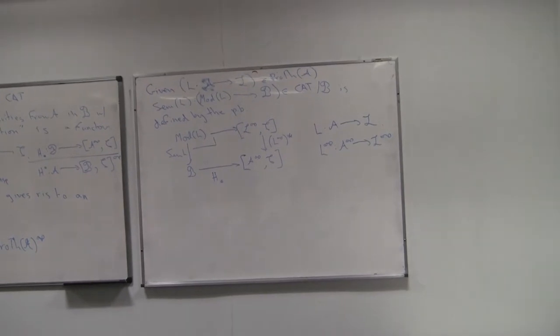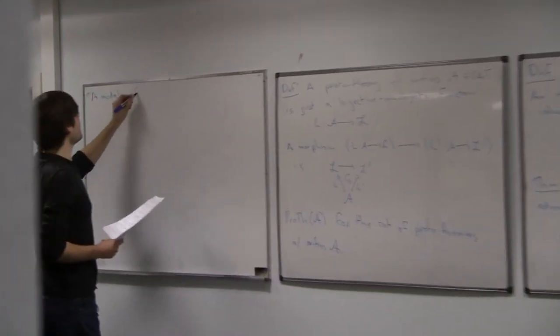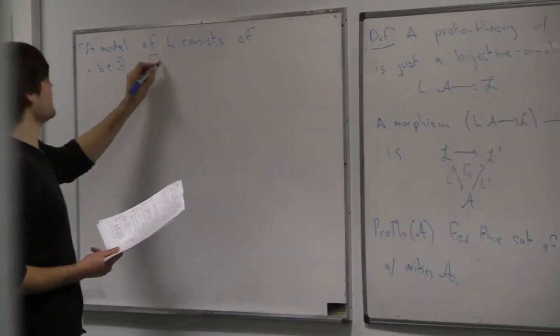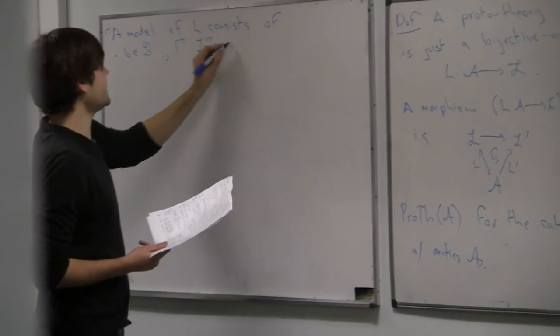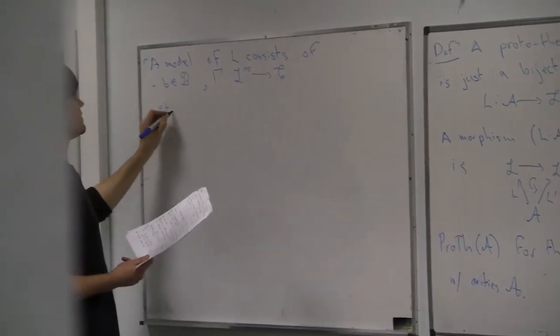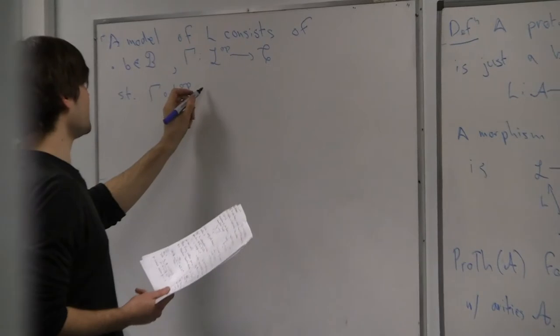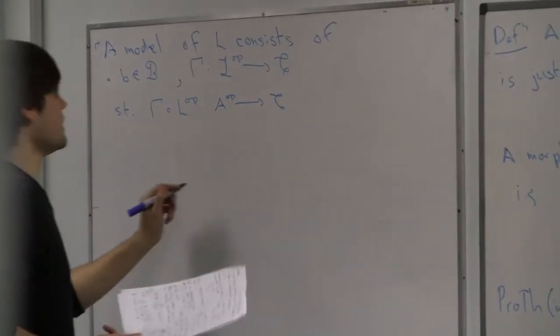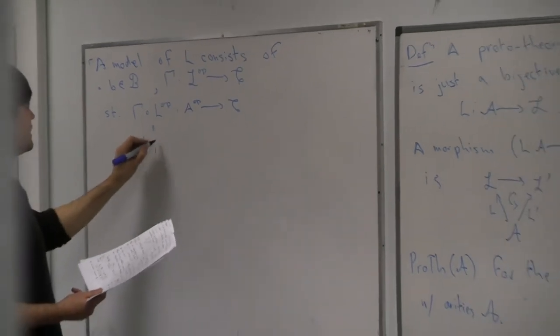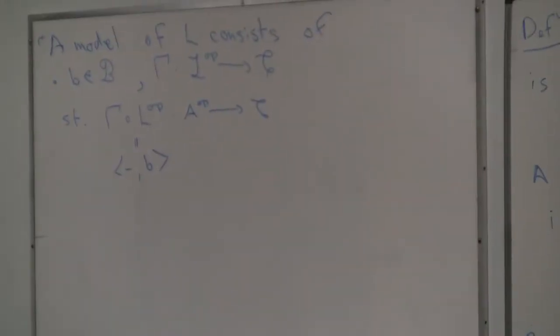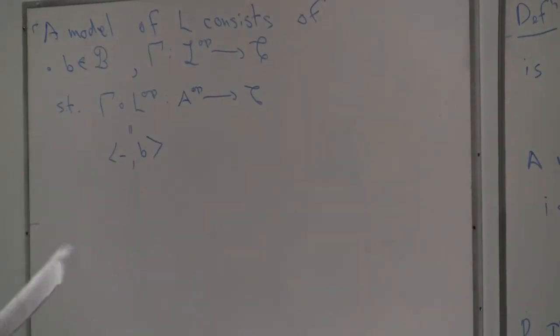An object of the category of models we'll call a model. A model of L consists of some object B in B and a functor Γ from L^op to C, such that Γ restricted along L^op — now going from A^op to C — equals the result of plugging B into the second argument of the aritation.